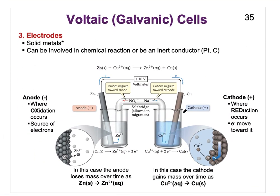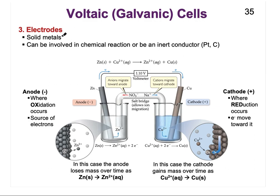These electrodes are typically solid metals. That solid metal can be involved in the chemical reaction or it can be an inert conductor, something like platinum or carbon. In our current example, the electrode is part of the chemical reaction — zinc solid is my electrode on the anode side, and copper solid is the electrode on the cathode side.